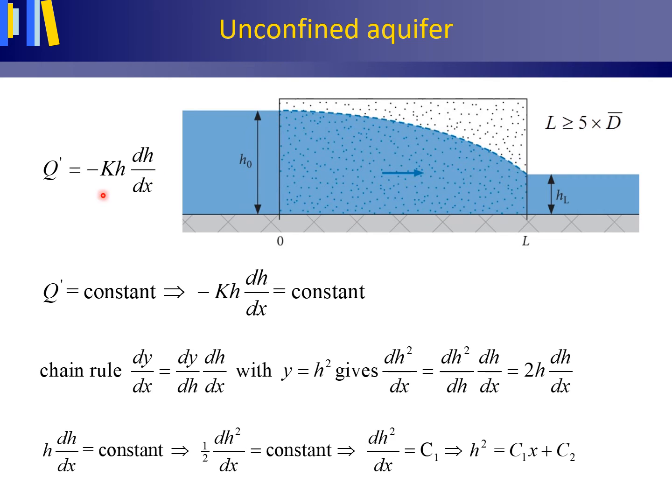Please note that Darcy's law is written as Q' equals minus K times the hydraulic head H times the hydraulic gradient dH/dx. The hydraulic head H is variable, it diminishes from left to right.